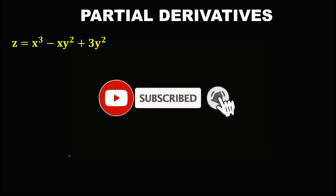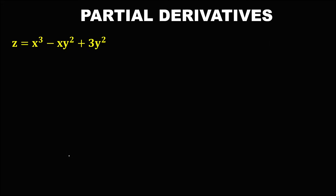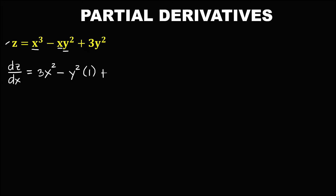Let's solve this problem to find the partial derivatives for this given equation. To find the derivative of z with respect to x, we assume that y is a constant. So the derivative of x to the power 3 is 3x to the power 2, then minus — since y is a constant, bring down y squared times the derivative of x, that's 1. Then plus, for this term since there is no x, this term is a constant and the derivative of a constant is 0.